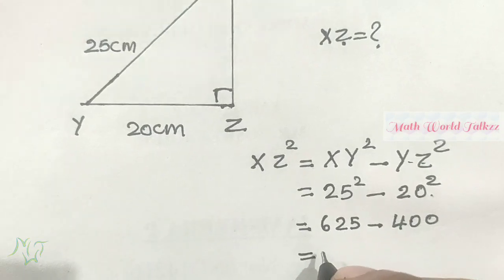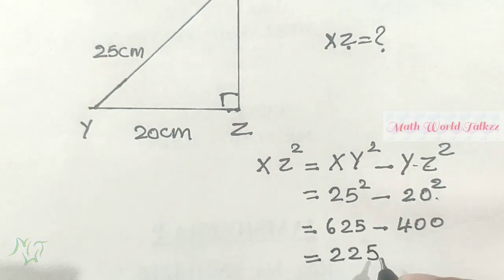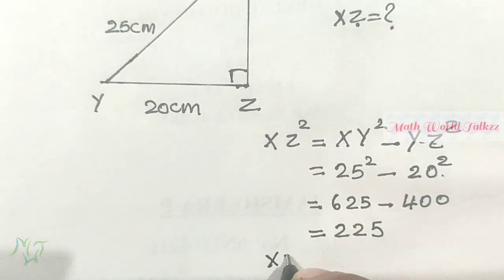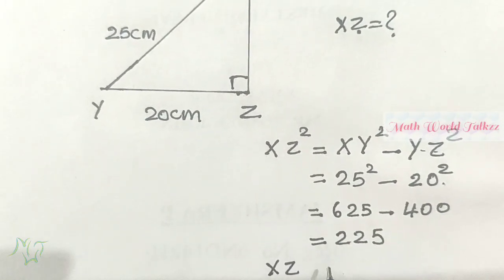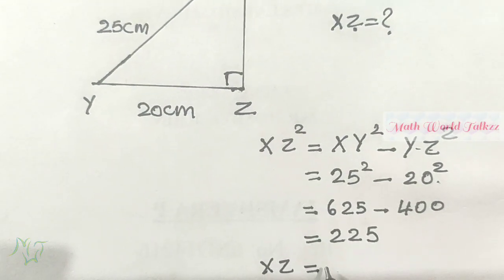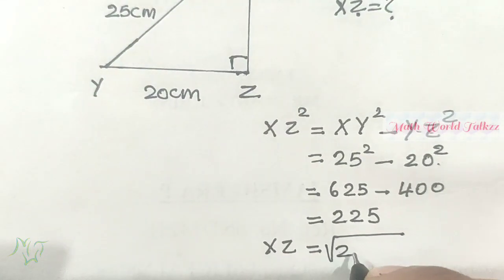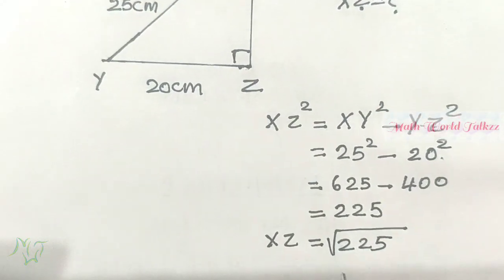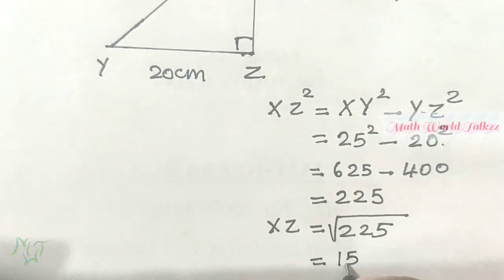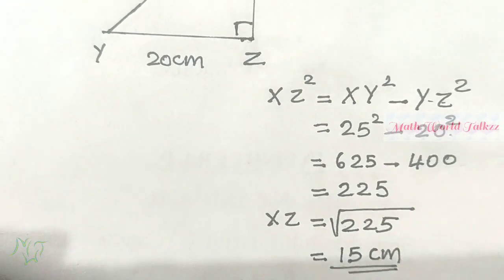25² is 625, minus 20² is 400. Subtracting, we get 225. So XZ = √225, and the square root of 225 is 15. Therefore XZ = 15 centimeters.